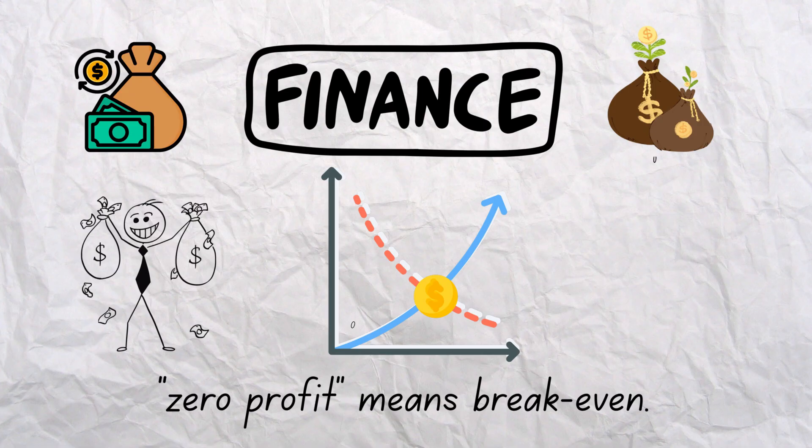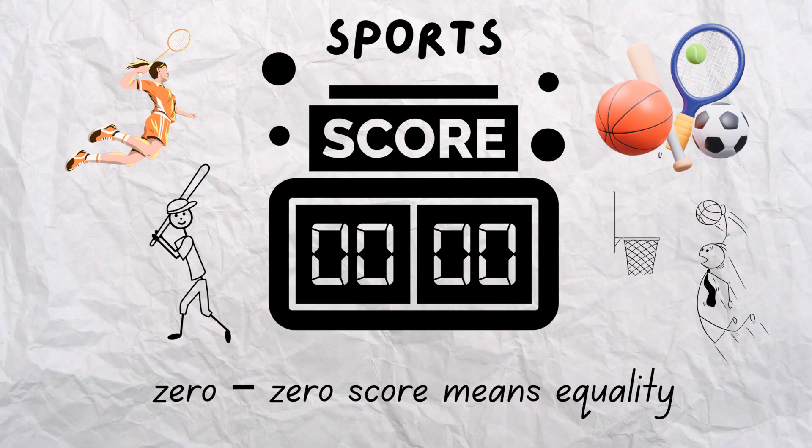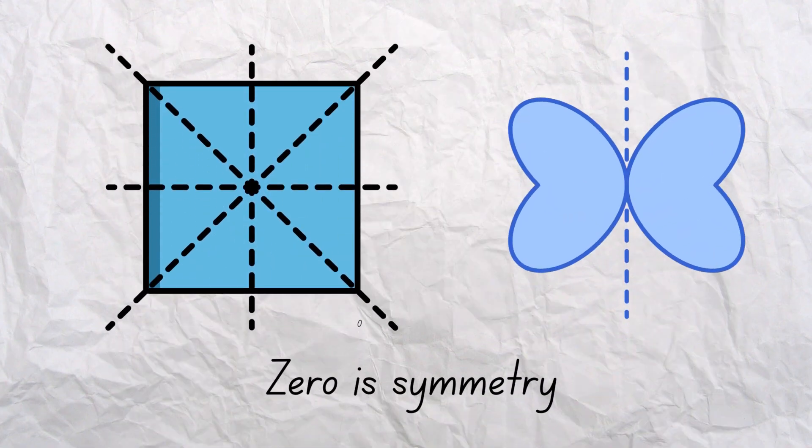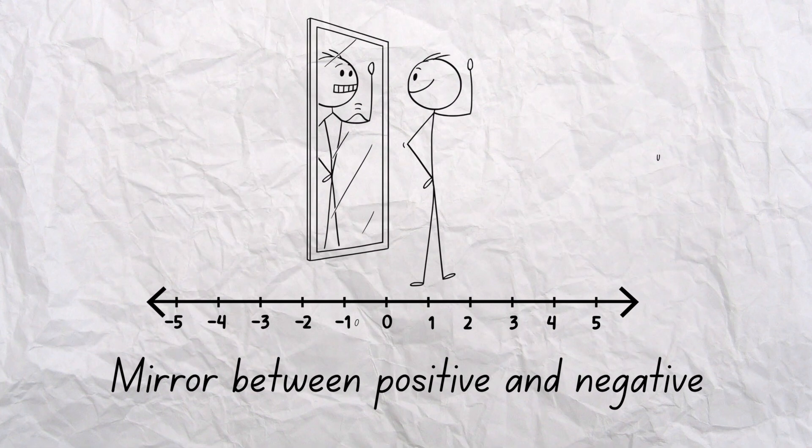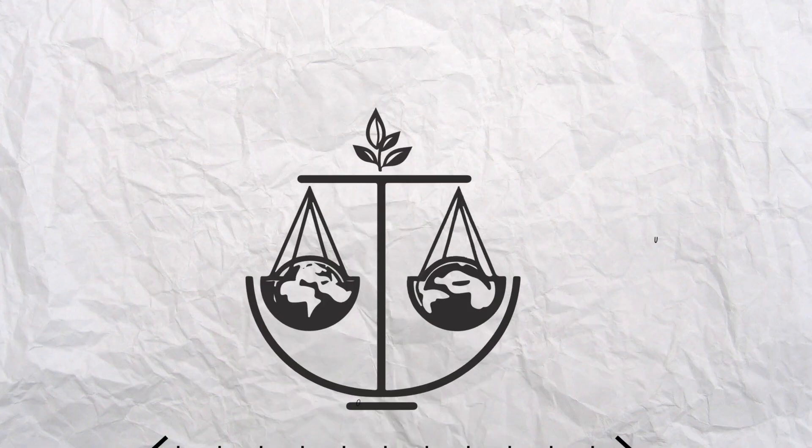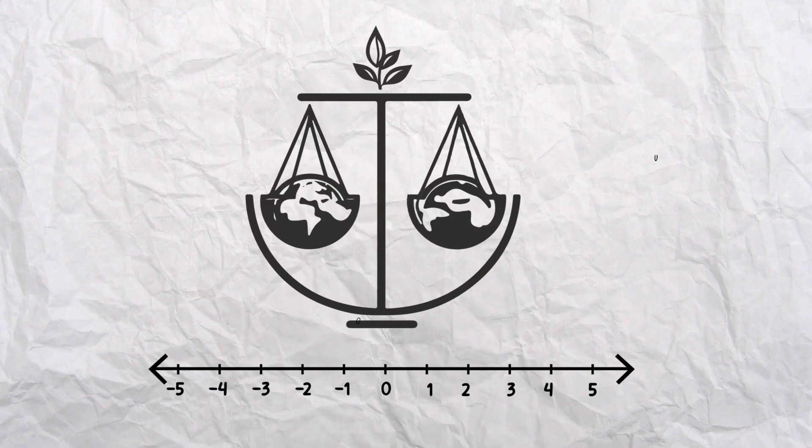In finance, zero profit means break even. In sports, a zero-zero score means equality. Zero is symmetry. It's the mirror between positive and negative, the silent center of all opposites. Without it, the world loses balance, quite literally.